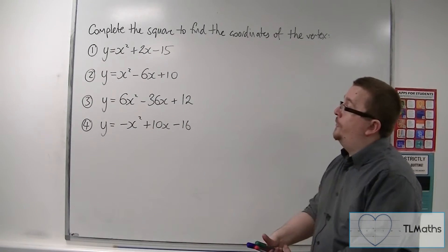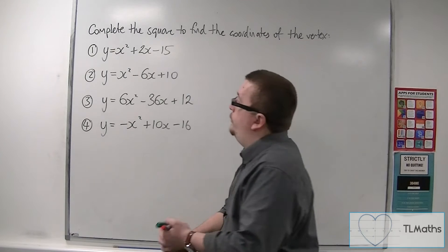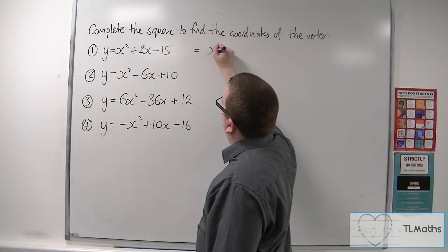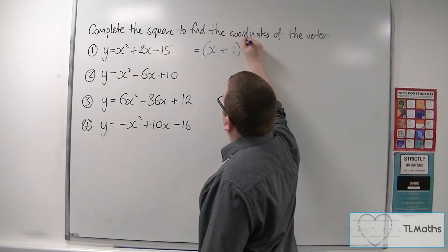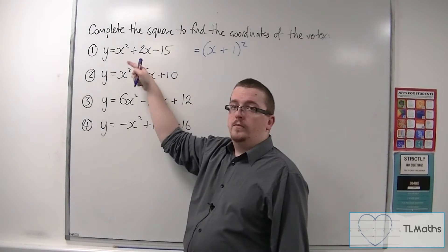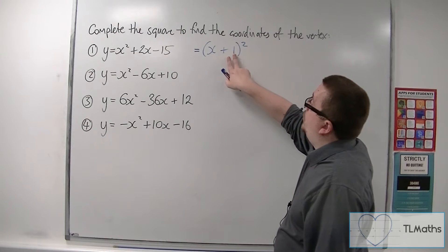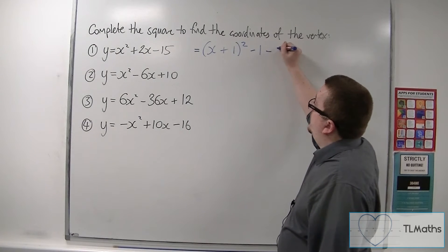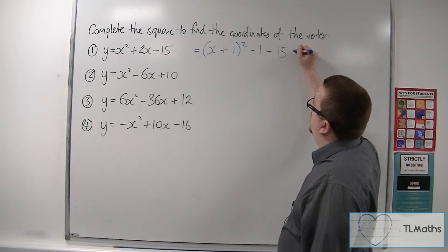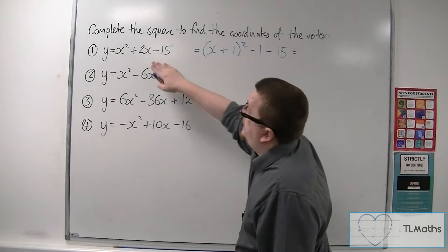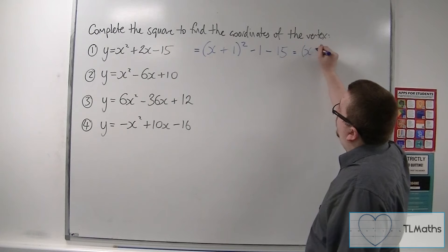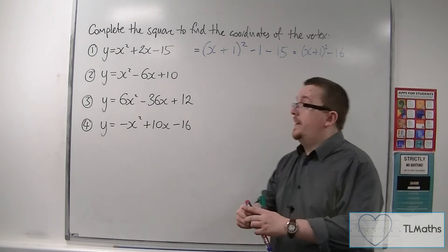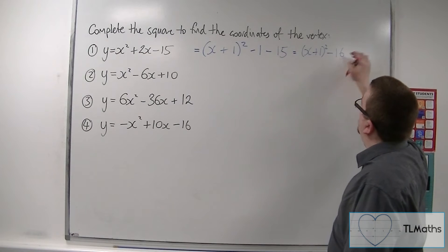For the first one, y is equal to x squared plus 2x minus 15. Reminding you of completing the square, we can write this as x plus 1 squared — we halve the 2 and get 1. We take away the square of this number, so take away 1 squared, just take away 1, and then take away 15 on the end. So we have x plus 1 squared, take away 16. The coordinates of the vertex are minus 1, minus 16.